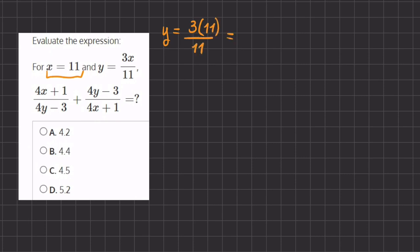Now we can simplify this by multiplying 3 and 11. So we have 33 divided by 11 and that gives us 3. Another way you could have solved is by eliminating the 11s and just simplifying to get 3.